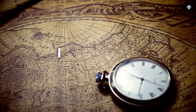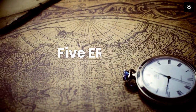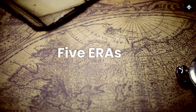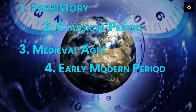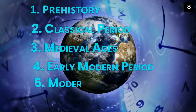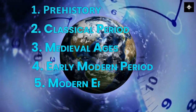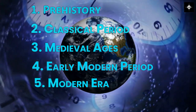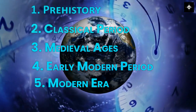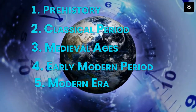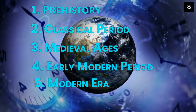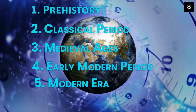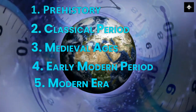To understand world history better, it is usually divided into five major eras or time periods: 1. Prehistory, 2. Classical Period, 3. Medieval Ages, 4. Early Modern Period, and 5. Modern Era. We will talk about all these eras one by one.